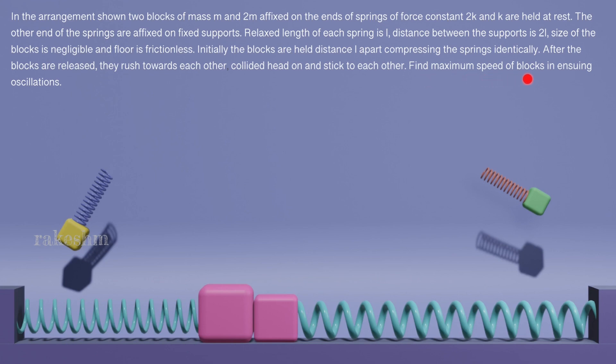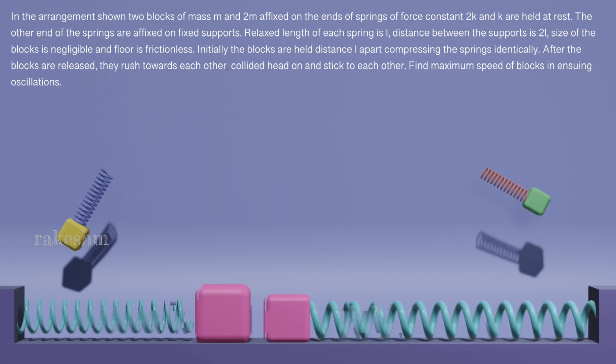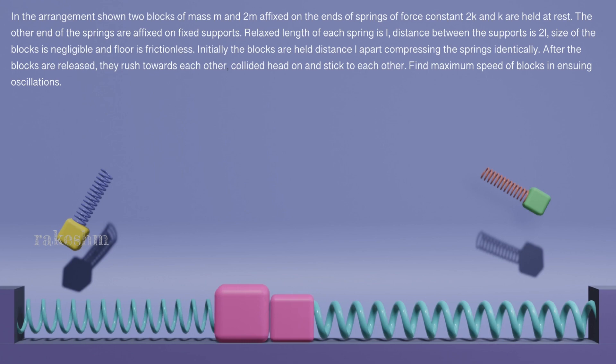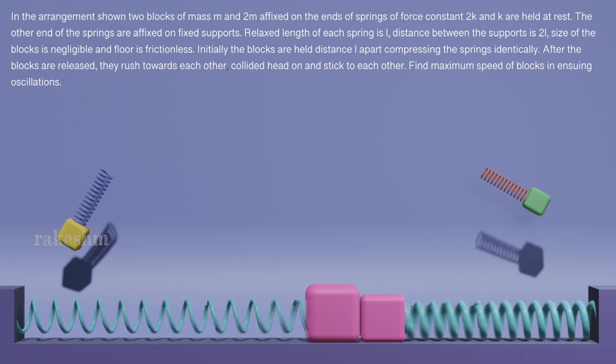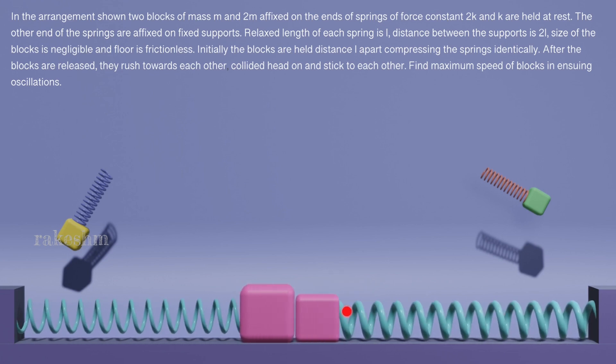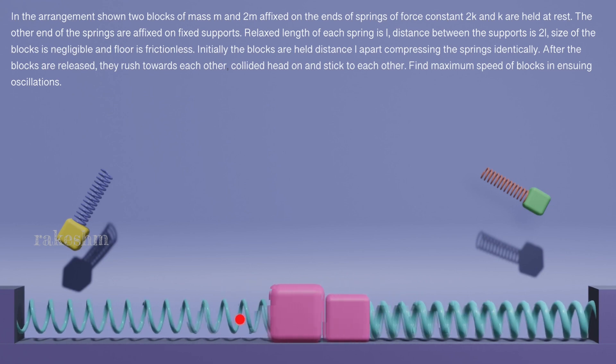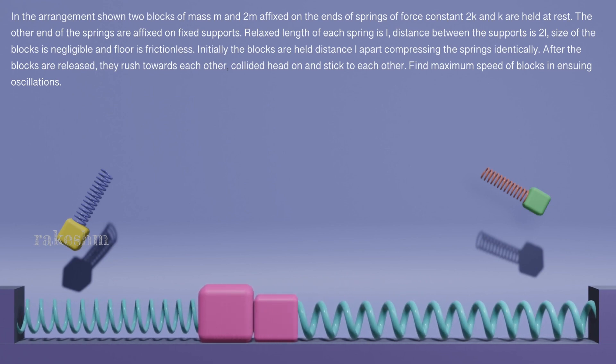Find the maximum speed of blocks in the ensuing oscillations. So I want you to look once more and predict where could be the maximum speed of the blocks occurring. See, you can say that the maximum speed occurs when the combined mass is at the center, when the springs, both these springs are at their natural length.